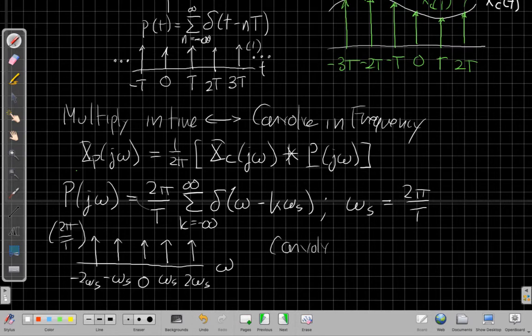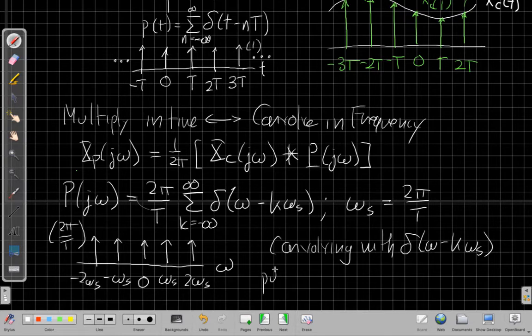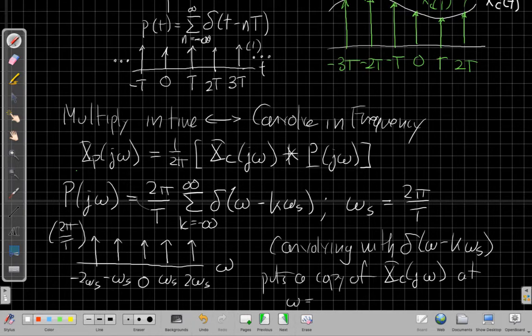So that's important to know. So convolving, even in continuous time, convolving with delta of omega minus some K omega S, puts a copy of the original spectrum of a continuous signal, X C of J omega at omega equals the location of the impulse.